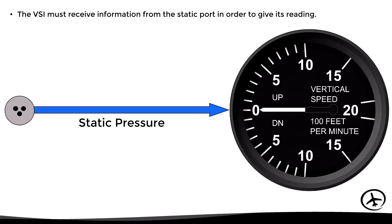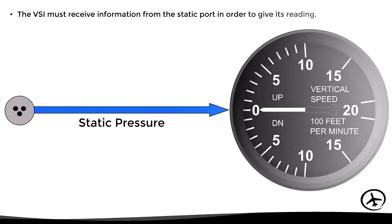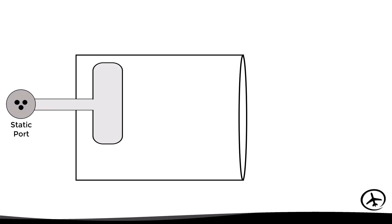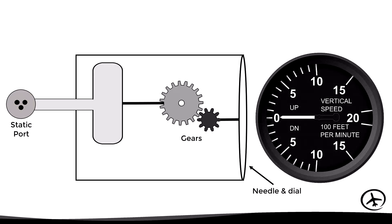So far we have seen the basic principle of operation, but let's see in more detail how the VSI actually measures the changes in static pressure. The static port is directly connected to an elastic capsule inside the instrument case, which in turn is connected to gears that move the needle in the dial.